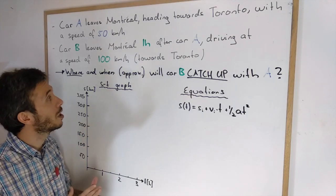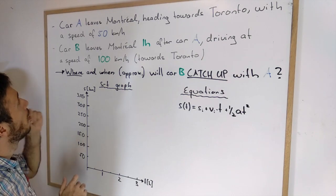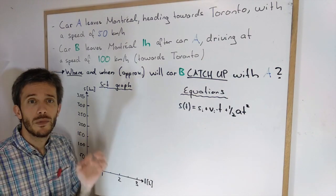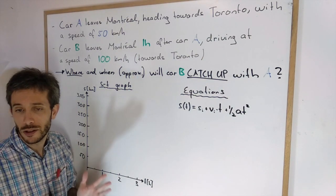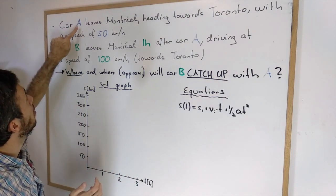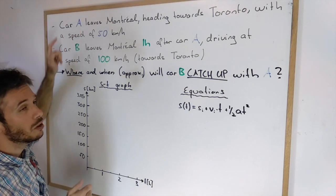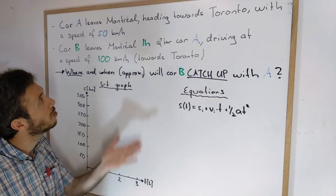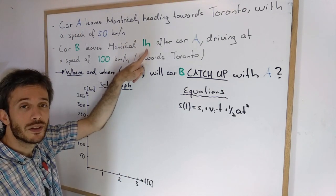The first thing that you should look at is when is time zero? Which one do we consider time as zero? You can actually choose yourself. Do we consider time as zero when A leaves Montreal or when B leaves Montreal?